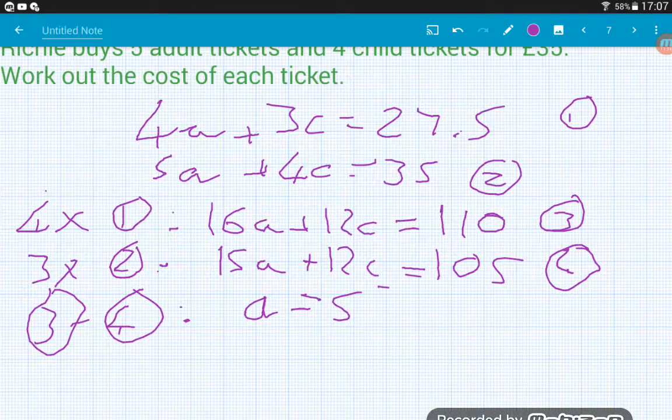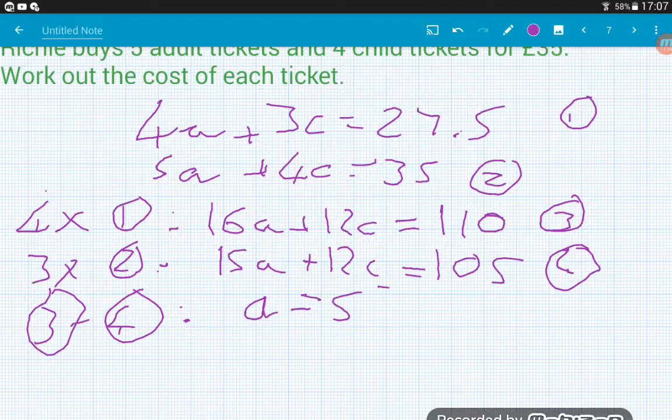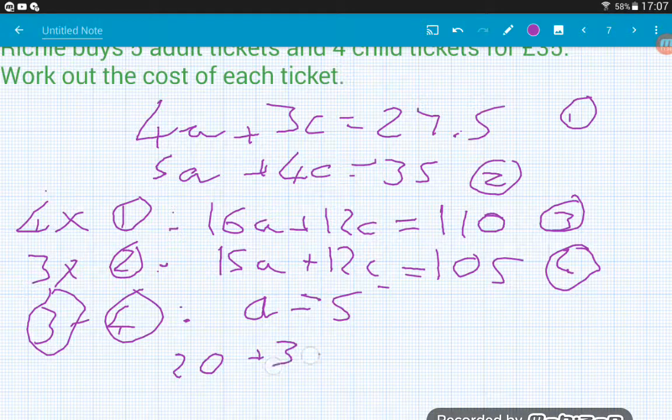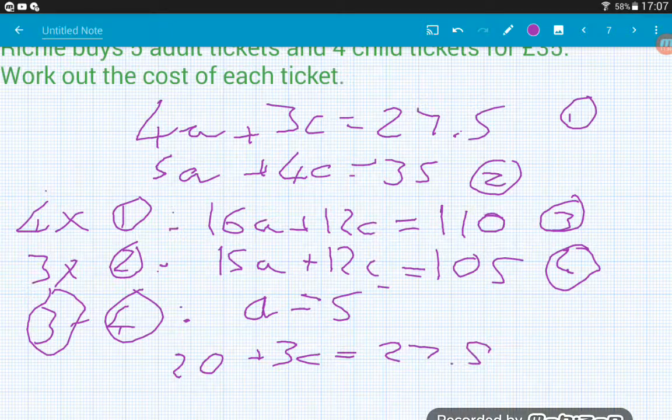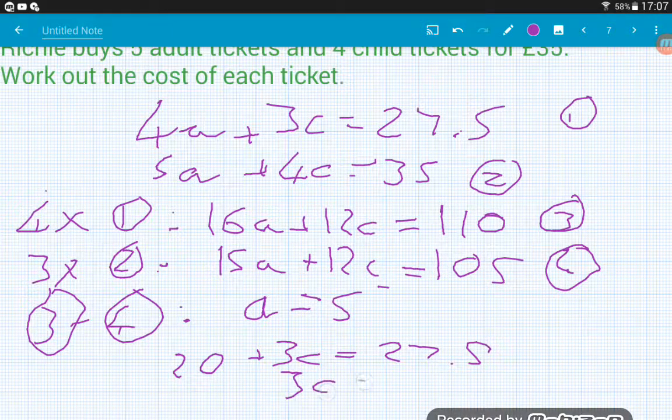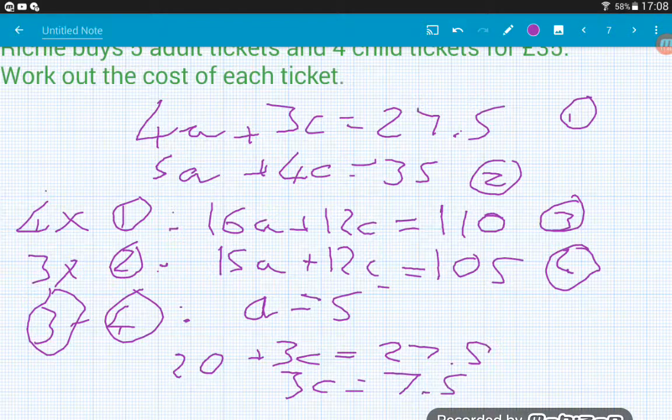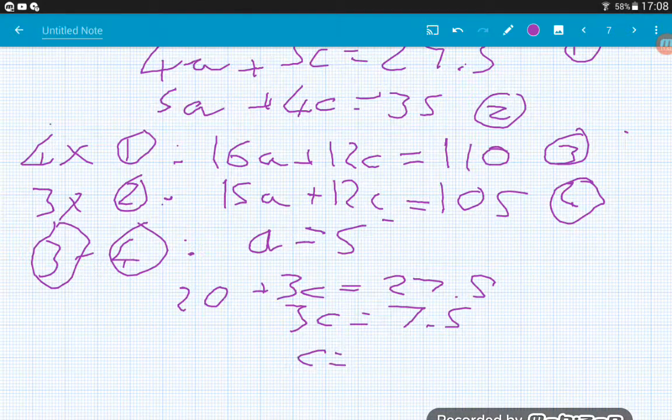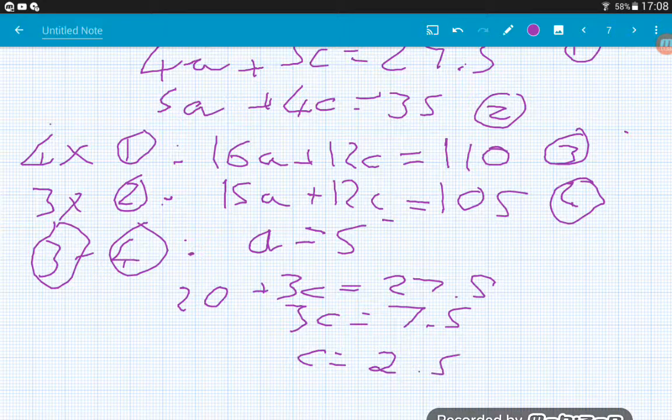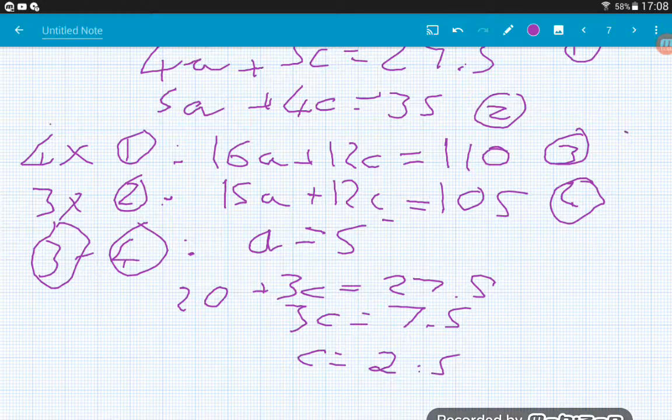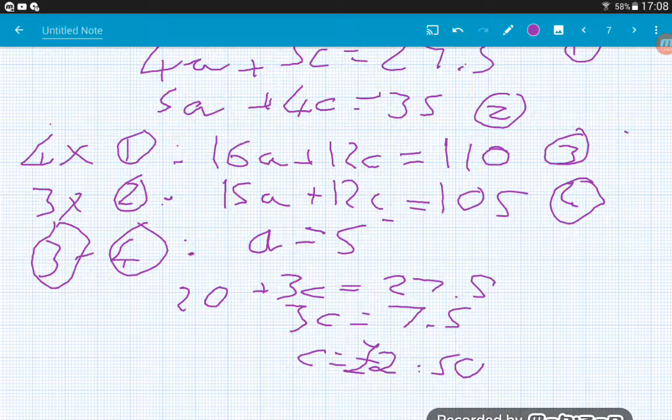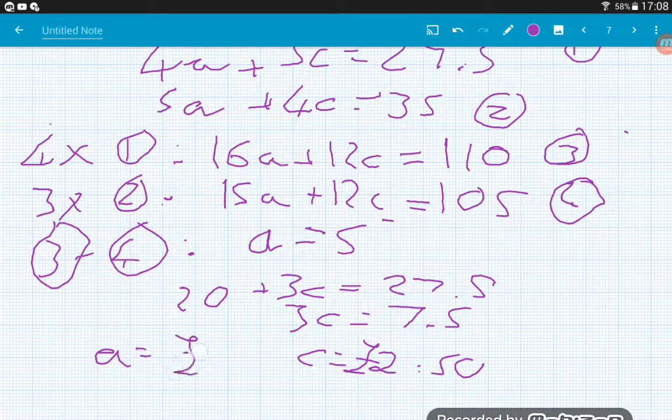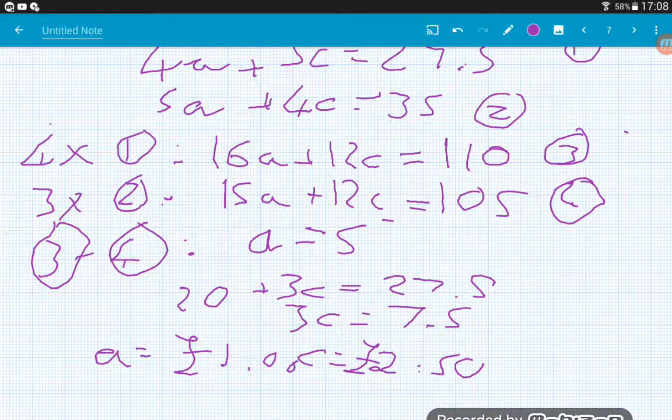And now that we know what an adult ticket costs, we can work out what a child ticket costs. So we know an adult ticket is five quid. So if we shove that into equation one, four times five is 20. So 20 and three child tickets is 27.5. And then finally divide by the three. And we get a child ticket is equal to 2.5, 2 pound 50. Remember as well, when it's money, put it in two decimal places. So a child ticket is 2 pound 50 and an adult is five pounds. Job done guys.